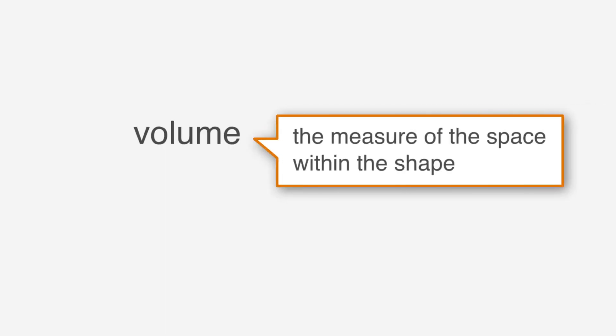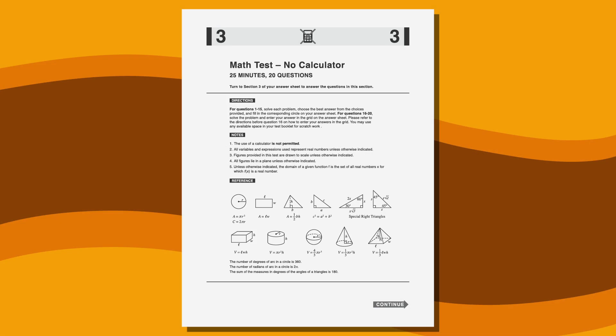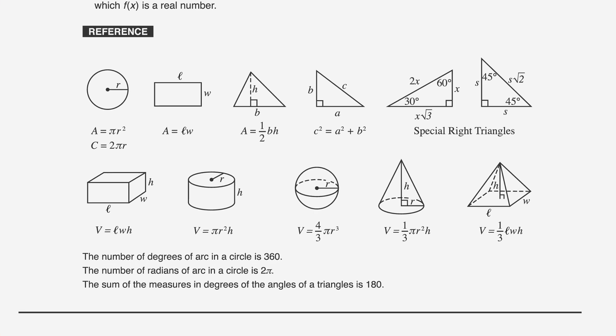Now, the first thing we need to be able to do with rectangular solids is to find the volume. Volume is the measure of the space within the shape. The formula is volume equals length times width times height. Fortunately, the formula for volume is given in the formula box, but you still need to know how to use it. Let's go through a problem together.